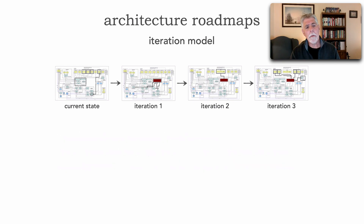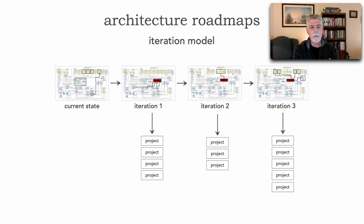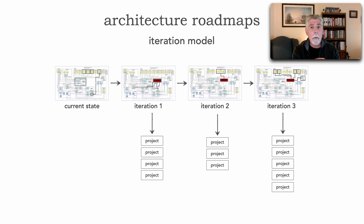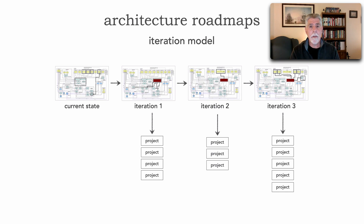The point is, regardless of the dimension, these iterations really generate projects. In order to go from, for example, the current state to iteration one, these projects have to happen in various systems. Those are the projects that usually get assigned to an application development team or an application architect to figure out how to reroute a line of communication from one system over to another, or to transform contracts, or add in some sort of component in the middle — these are all the various projects.